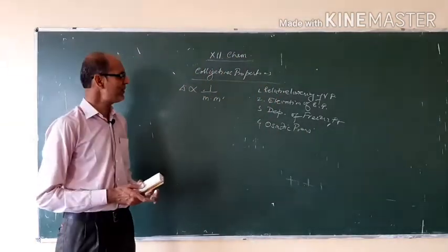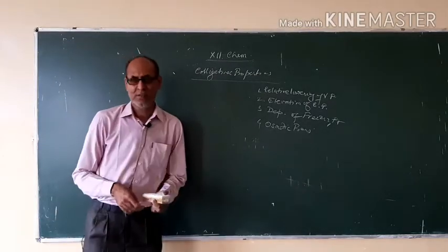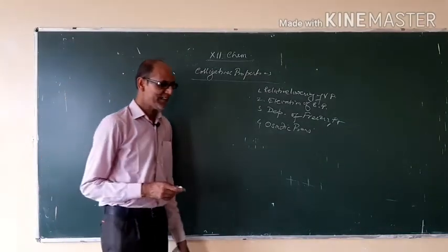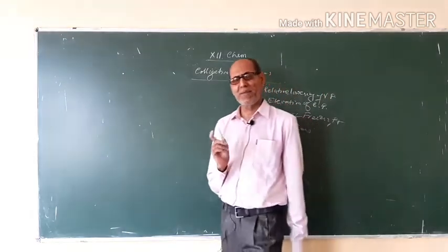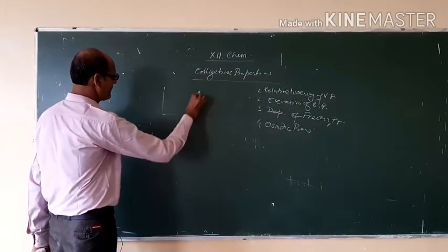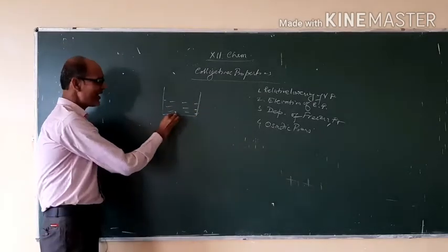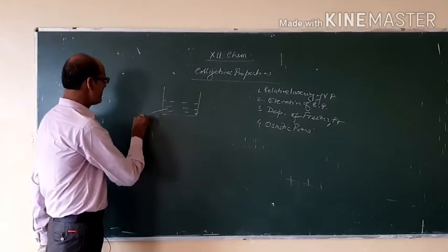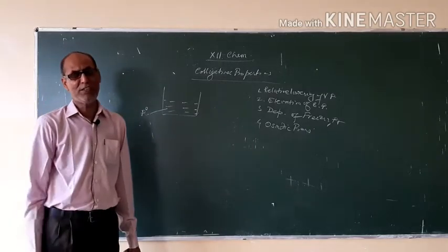What is the relative lowering of vapor pressure? According to Raoult's law, when we add any non-volatile solute in solvent, vapor pressure decreases. Suppose you have taken a solvent here. In this time you have not added anything, this is the pure liquid. Its vapor pressure will be maximum and indicated by P0.